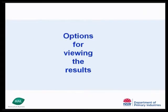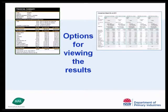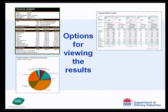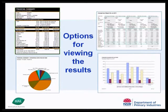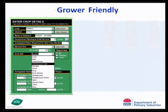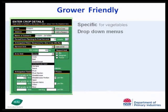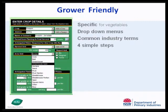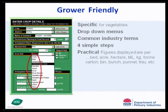There are options for viewing the results of the information VegTool generates. You can view the information in a detailed table, or see it in graphic forms which are easy and quick to interpret. VegTool is grower friendly — it's specific for vegetable crops and the vegetable industry. There are several drop-down menus which means less typing, a range of common industry terms used, and four simple steps. Figures are displayed per bed, per acre, per hectare, per megalitre, per kilogram, per tonne, and so on.